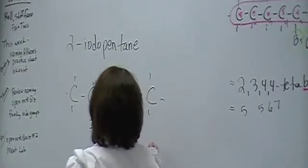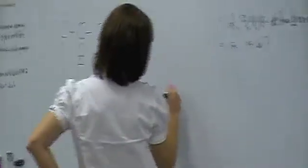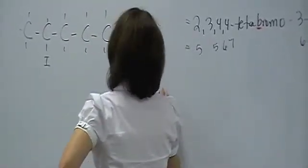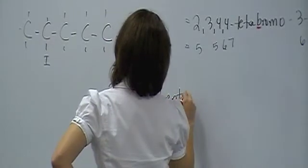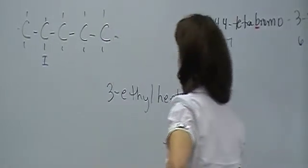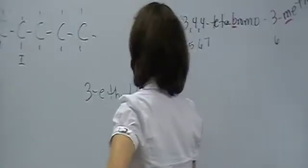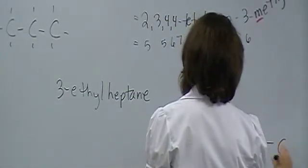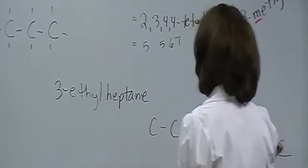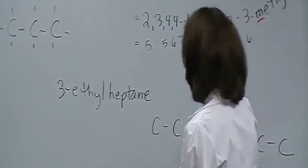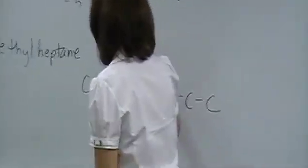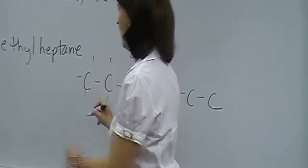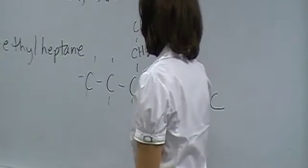Say I want you to draw 3-ethylheptane. How many carbons? Seven. One, two, three, four, five, six, seven. And then on the third carbon over you put an ethyl, which is CH2-CH3. You know that because you look back where you list all your side chains.